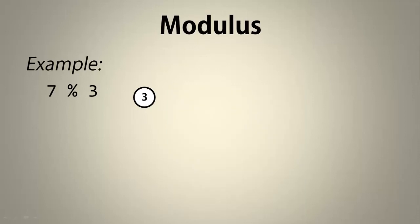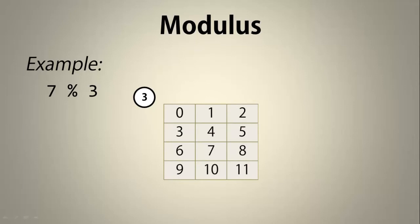Yet another way to think of this problem is by using a table. We're looking for 7 modulo 3, so we need to construct a 3-column table starting with 0. Our answer is a number less than 3 and greater than or equal to 0, so our answer will be in this row. Then we locate 7 and go up the table until we find our answer, which in our problem is 1.